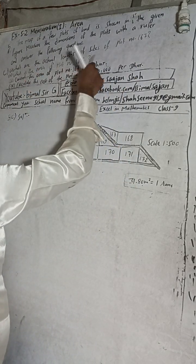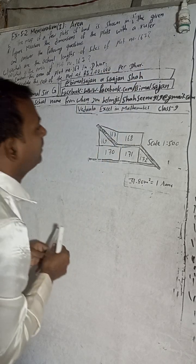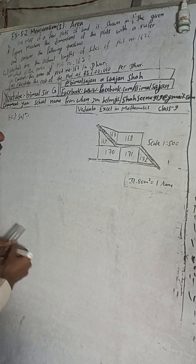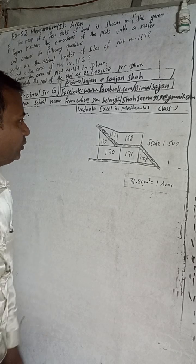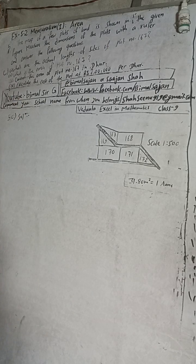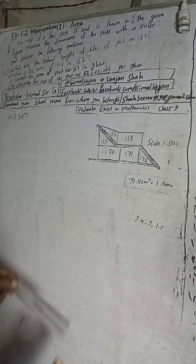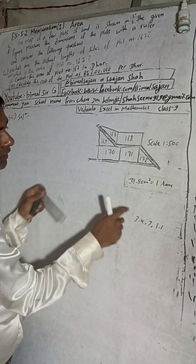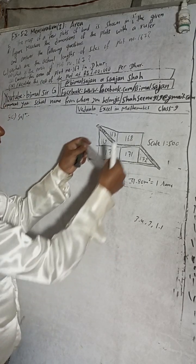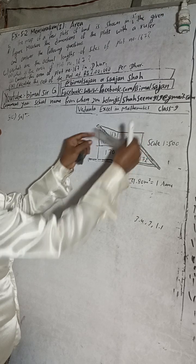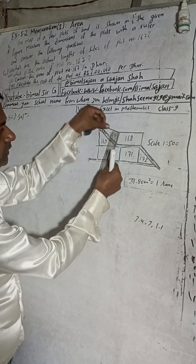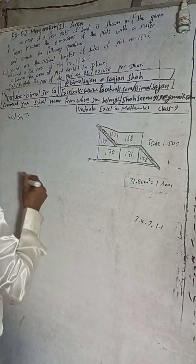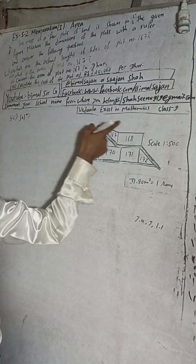Question number one: what are the actual lengths of the sides of plot 167? This is a triangular shape. I'll pause the video and measure first. Okay, I measured using the scale in the book. When I measured, I got 3.4 cm for side a, and for the next side I got 3 cm, and for the third side I got 1.1 cm.